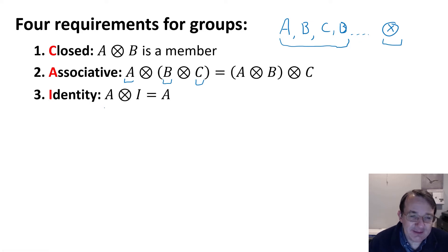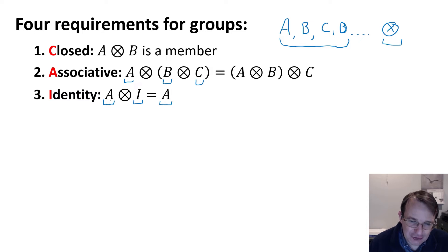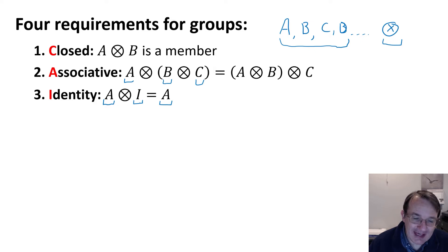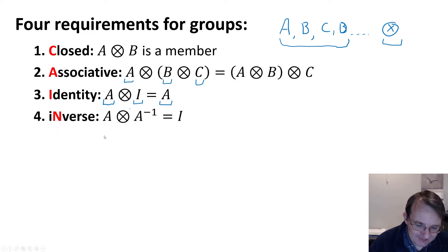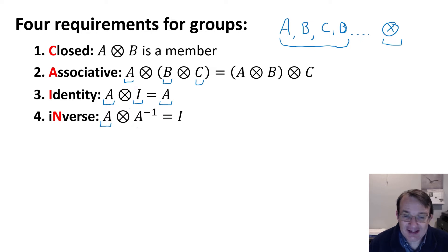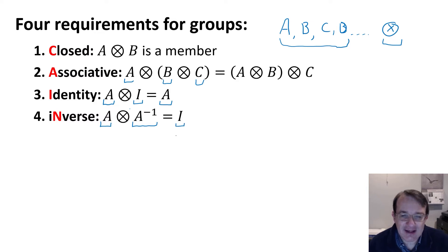The next requirement is there has to be an identity, meaning there has to be a member of the group such that when any element a is operated on with the identity i, I always get a back — and this has to be true for any member of the group. Lastly, there has to be an inverse: if I've got an element a, there has to be another member of the group — the inverse of a — such that when I operate a with its inverse, I get back the identity element.